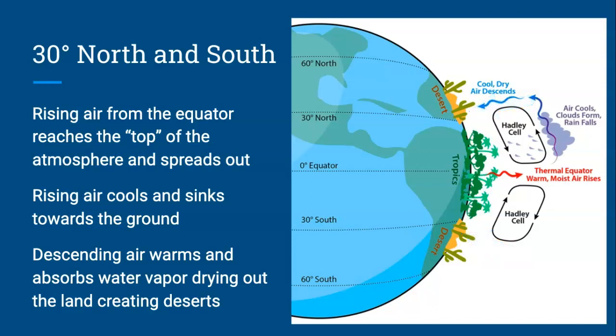And as that air cools and sinks, it begins to absorb water vapor, because as it heats up, it begins to absorb water vapor due to evaporation. Now, that air that is descending basically dries out the land at 30 degrees north and south. And then it starts traveling back towards the equator. So all of the water vapor from 30 degrees north and south starts traveling towards the equator. This causes 30 degrees north and south to be incredibly dry areas of Earth.